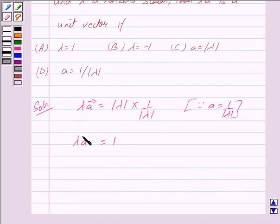So we have got lambda vector A is equal to 1 by taking A is equal to 1 upon mod lambda. So we have proved lambda vector A is a unit vector.